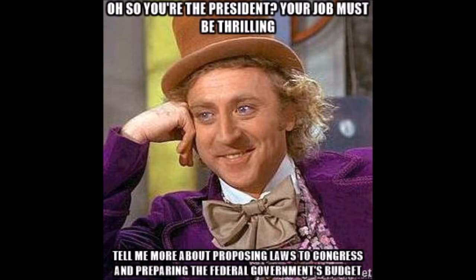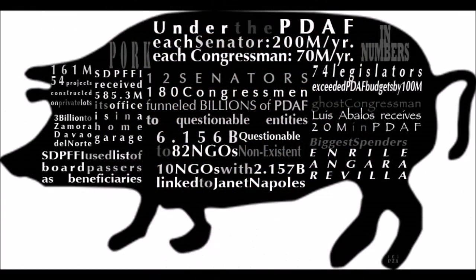Yet the reality of the situation is that the three branches of the federal government — the Congress, the President, and the Supreme Court — begrudgingly cooperate with each other. For example, the President can propose laws to the Congress, and the Congress will pass those laws because it will allow them to not only keep their seats, but also bring pork — that is, stolen loot — back to their own congressional districts.